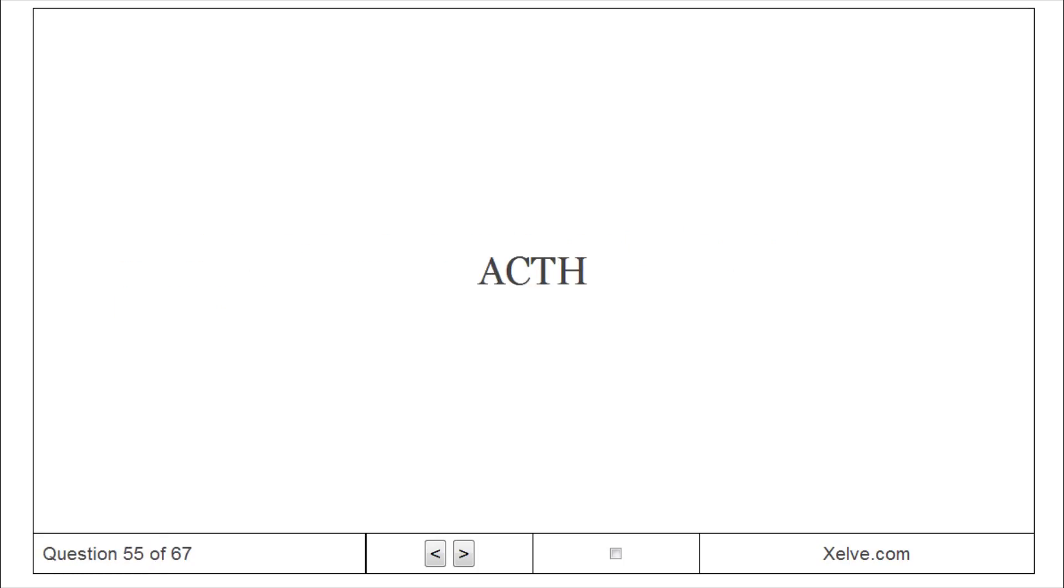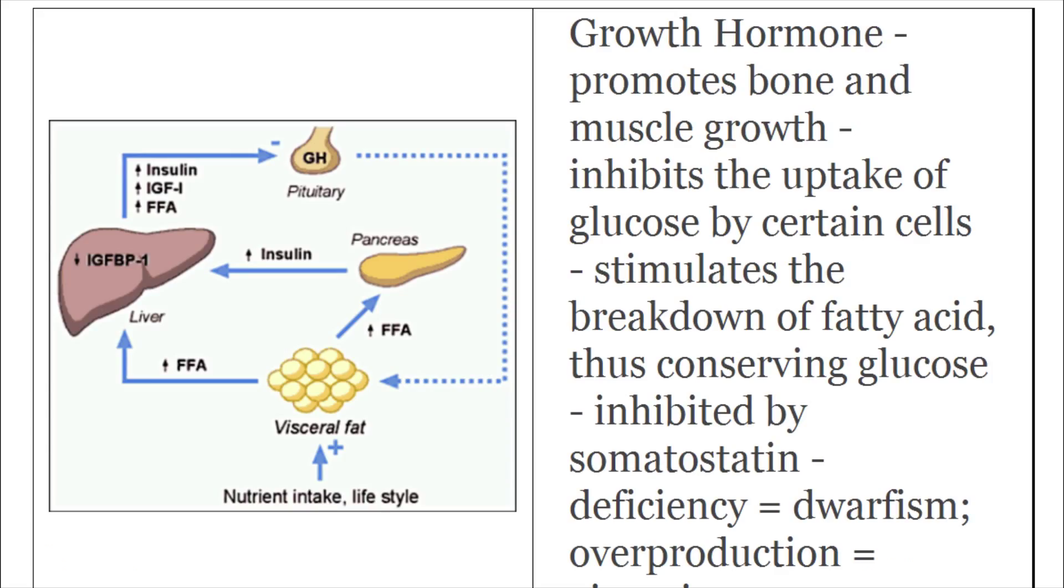ACTH: adrenocorticotropic hormone. ADH: antidiuretic hormone, vasopressin. EPI: epinephrine. FSH: follicle-stimulating hormone. GH: growth hormone. Promotes bone and muscle growth, inhibits the uptake of glucose by certain cells, stimulates the breakdown of fatty acids, thus conserving glucose.